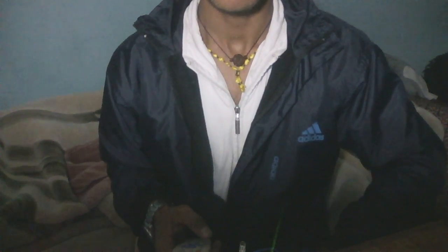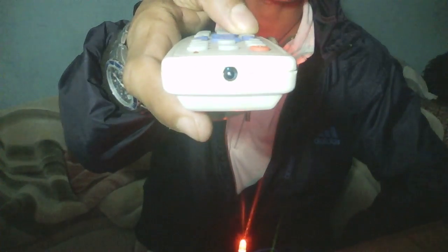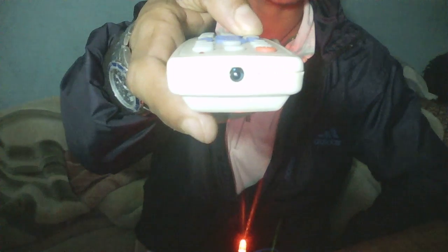Infrared light cannot be seen by our naked eye, but it can be seen with the help of a camera. Here is the remote. It's blinking, giving flashes of infrared light. We can only see it with the help of a camera.